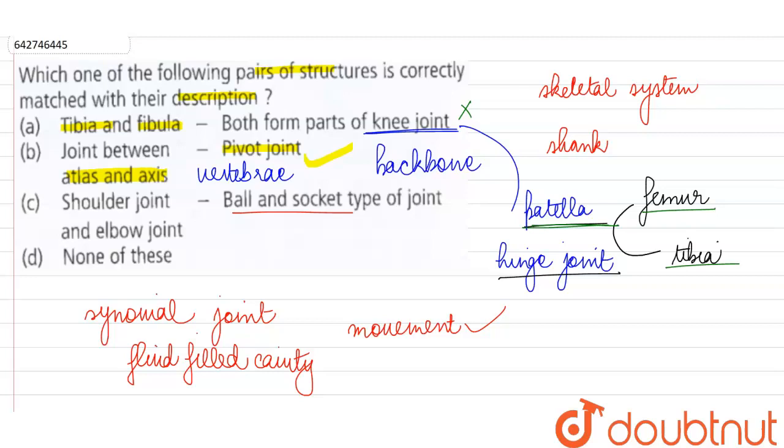And out of these, the first vertebra is called the atlas, the second is called axis, and the special pivot joint between these vertebrae allow a lot of rotatory movement, considerable movement of our head. So this is a correct combination.